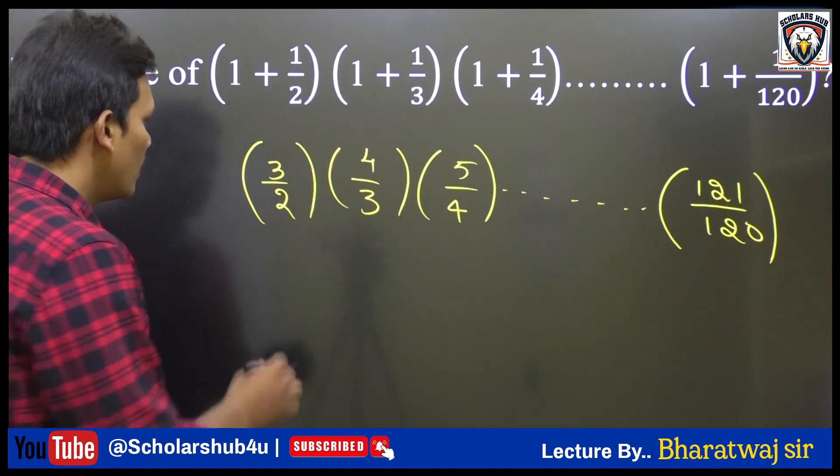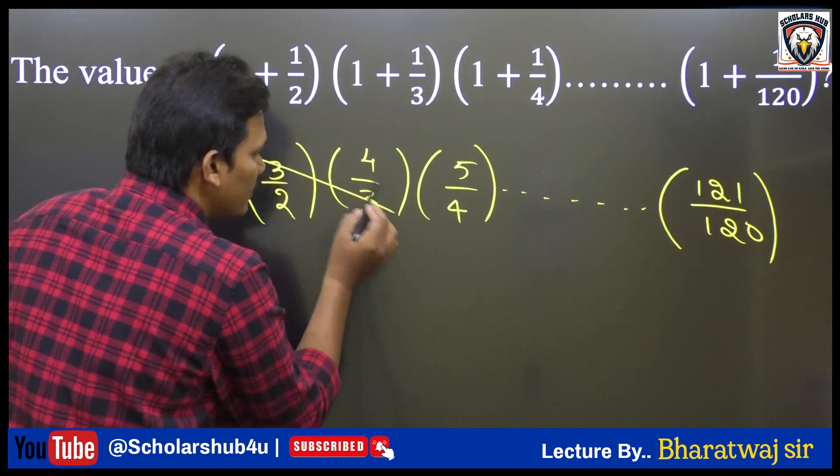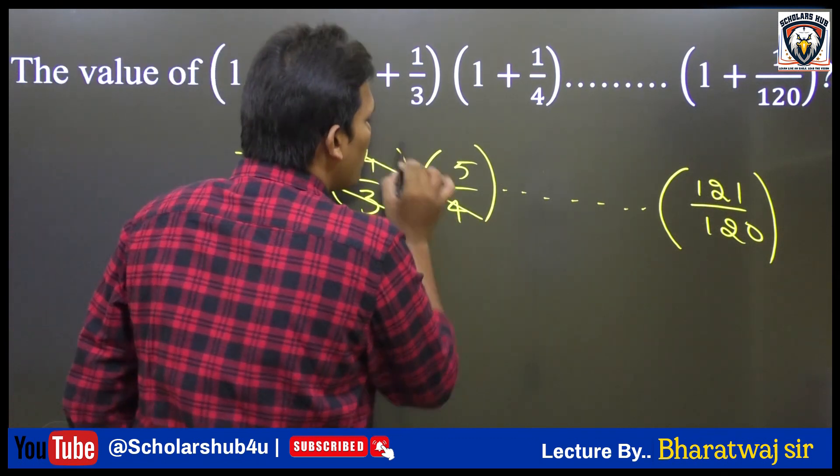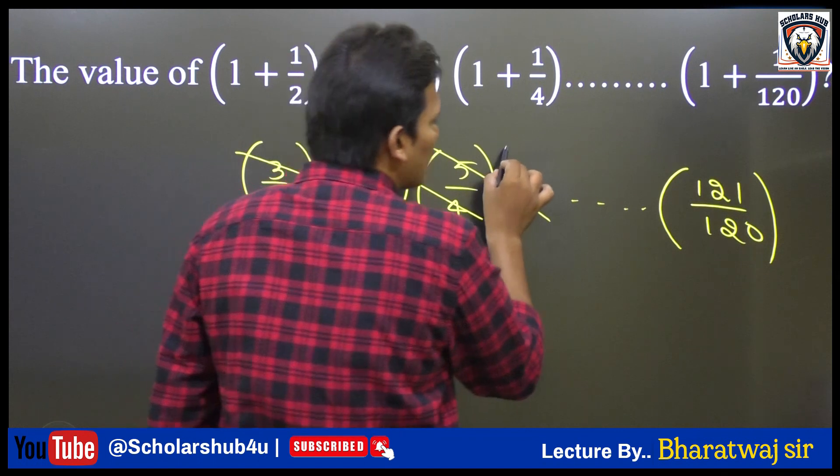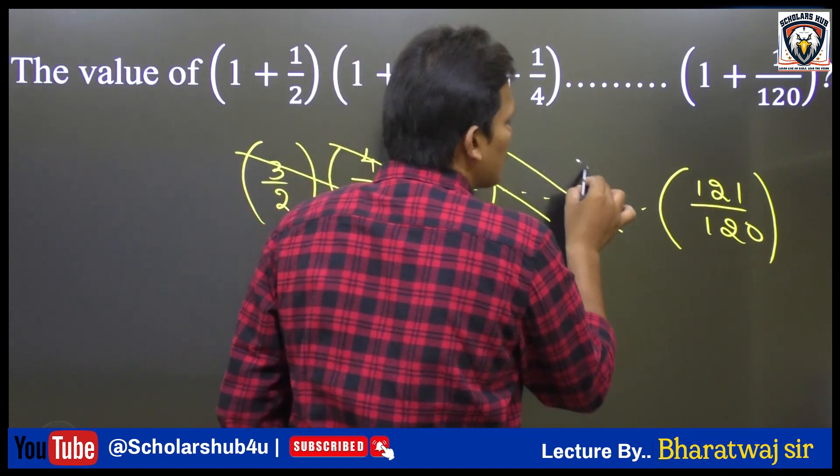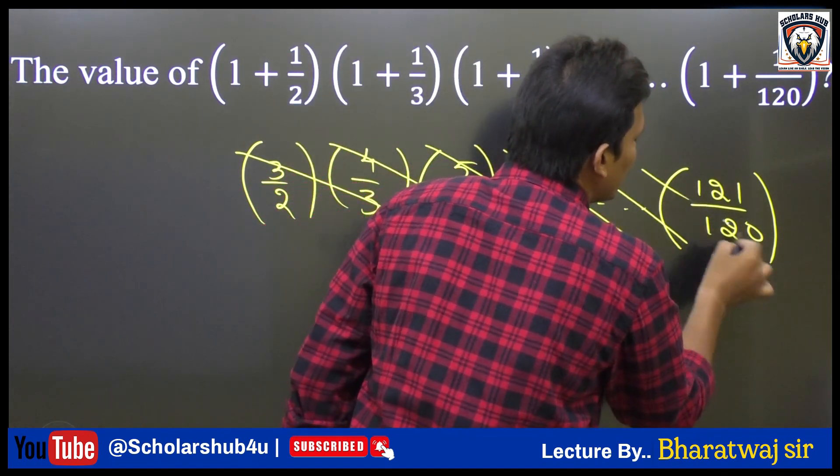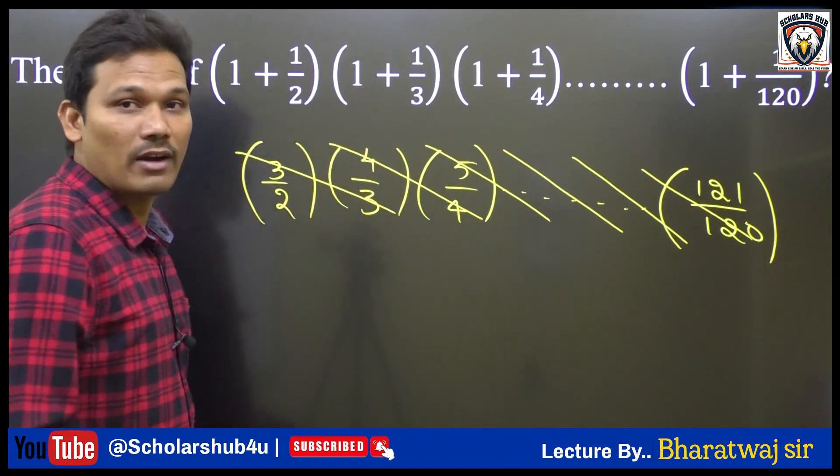So now observe this question. You may cancel this 3 and 3, you may cancel this 4 and 4, you may cancel this 5 and 5, 6 and 6, 7 and 7, 120 and 120.